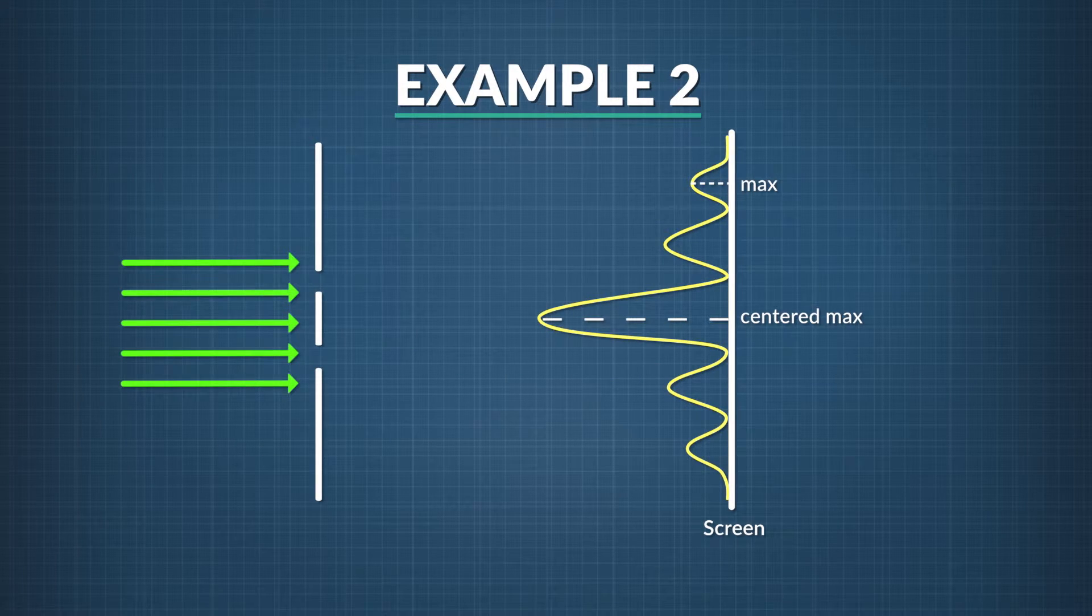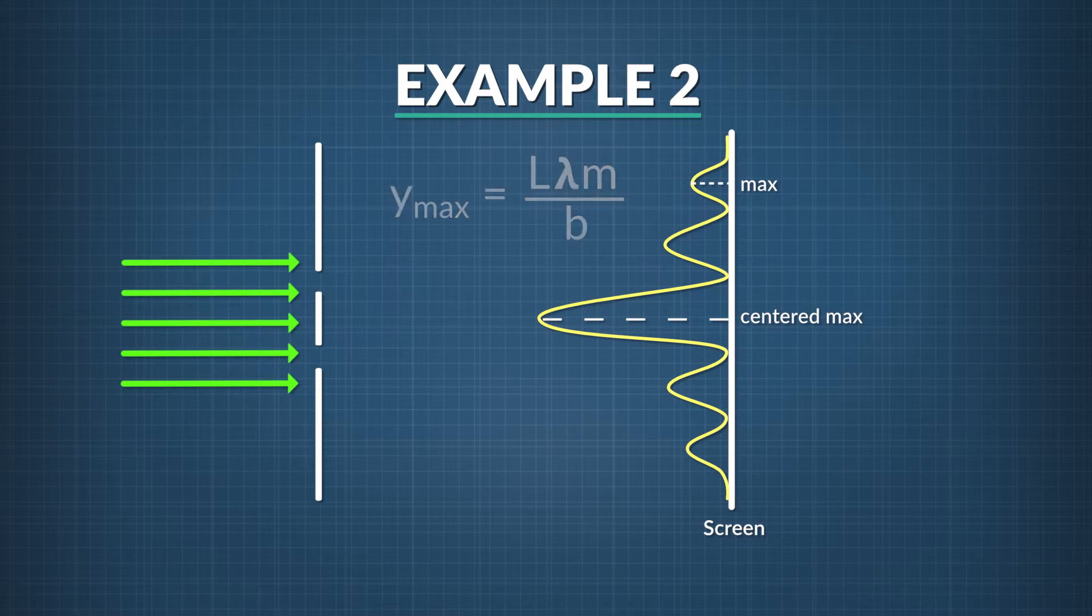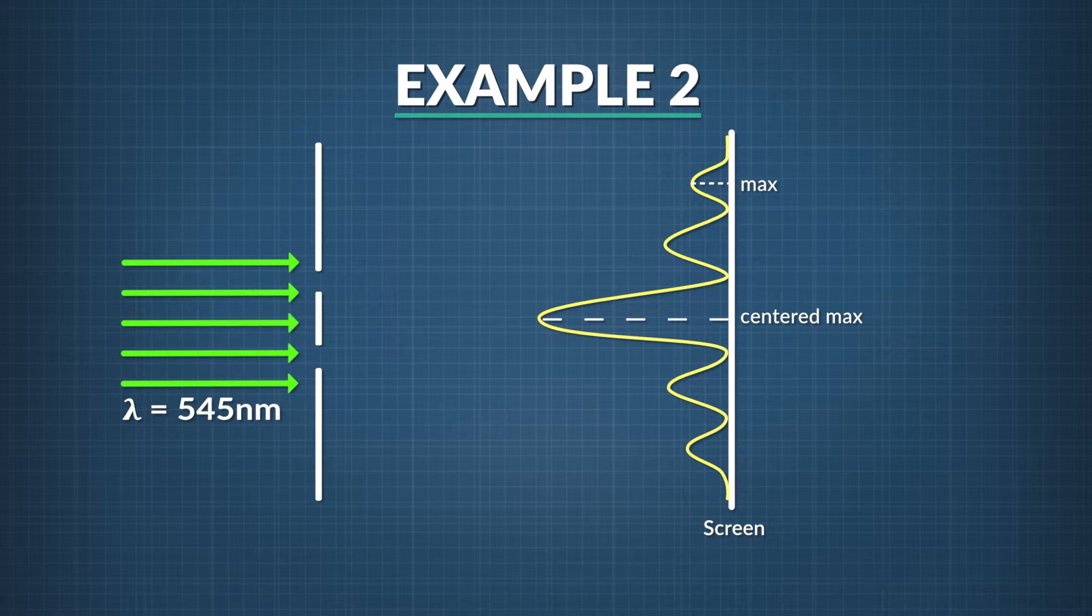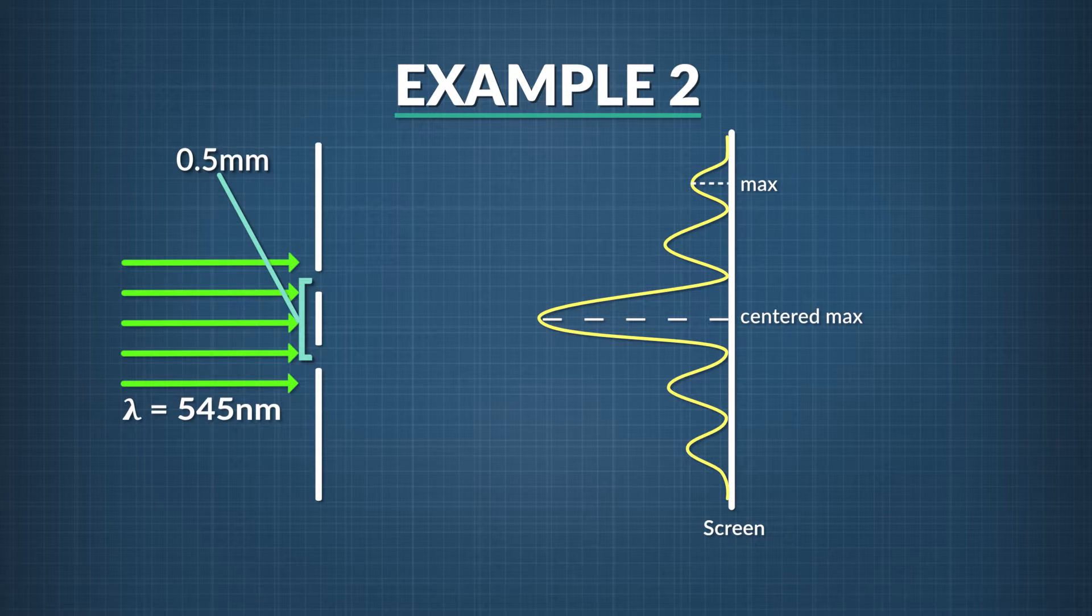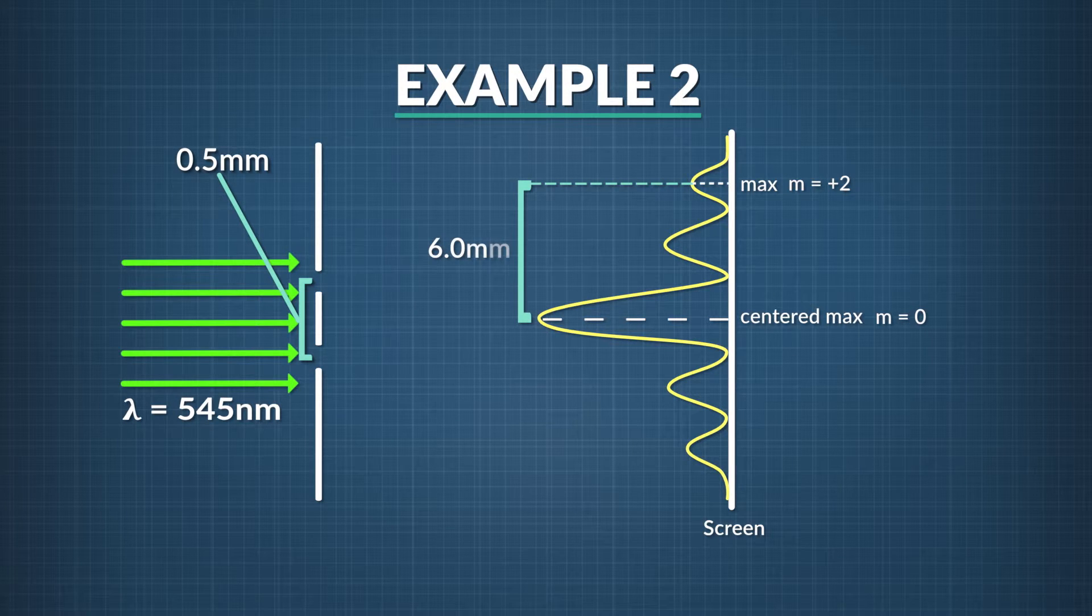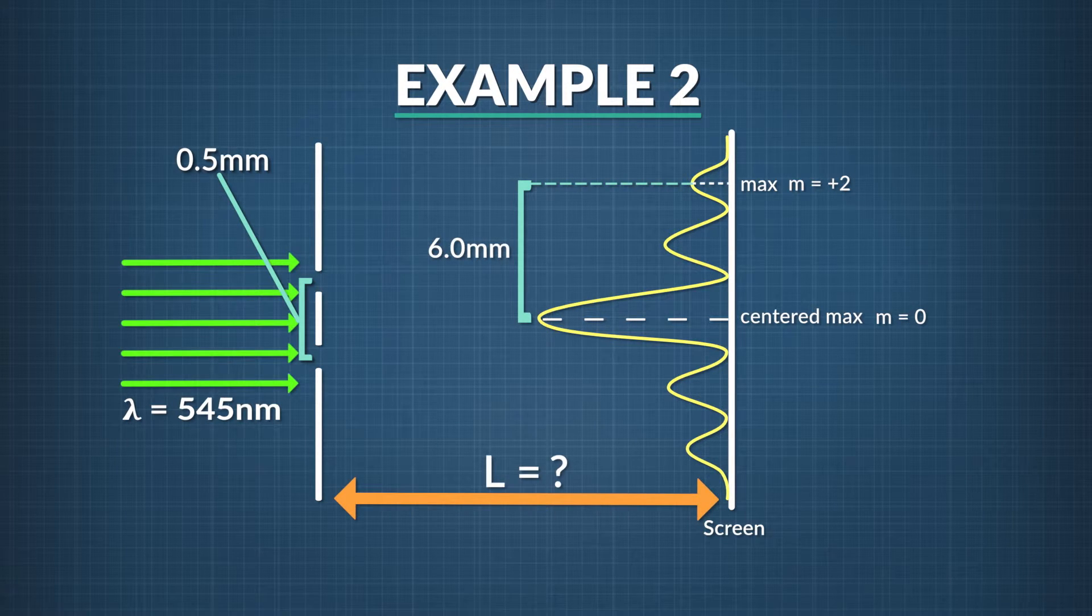Now we'll look at an example with a light wave. But remember, it's the same dynamics with any type of wave. In this case, we have two slits instead of one, so we'll use the double slit equation we looked at earlier. Green laser light with a wavelength of 545 nanometers shines on a surface with two slits spaced at 0.5 millimeters apart. The diffracted light waves mix and land on a screen behind the slits. Looking at the pattern of bright and dark spots created, take a ruler and measure the distance from the center of the pattern to the second bright spot above it. The distance is 6.0 millimeters. What is the distance between the slits and the screen?